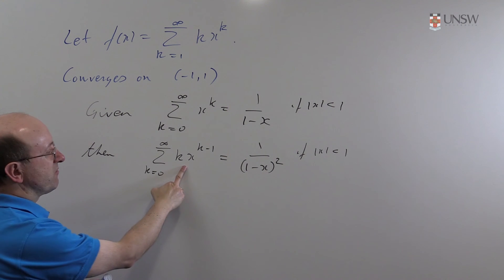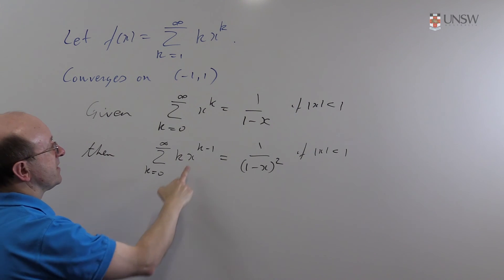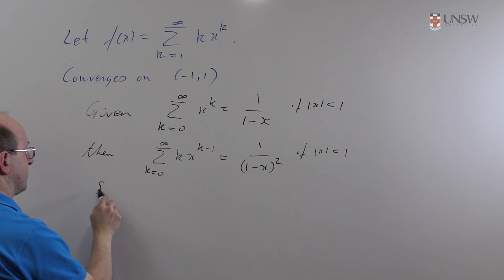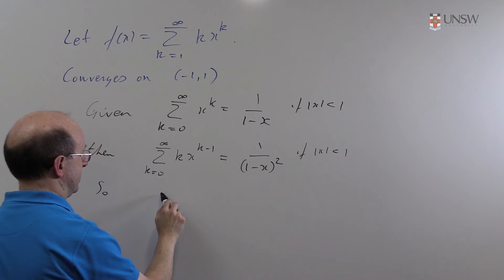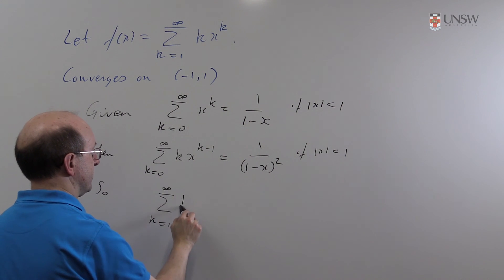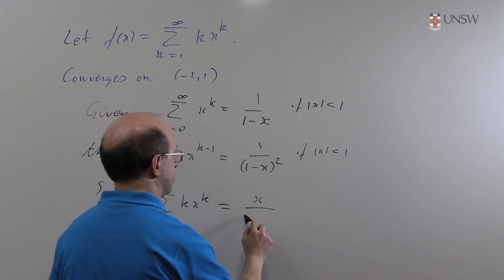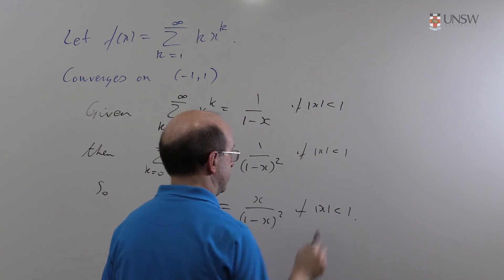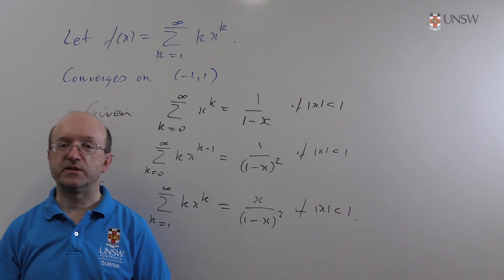Well, that's not quite what we wanted, because we've got k times x to the k minus 1 here, and we wanted k x to the k — but we can just multiply through by x. And of course the k equals 0 term we might as well forget about, because it's just going to be 0. So we get the sum from k is 1 to infinity of k x to the k equals x over (1 minus x) squared, if mod x is less than 1. And that's the closed form for this particular function.